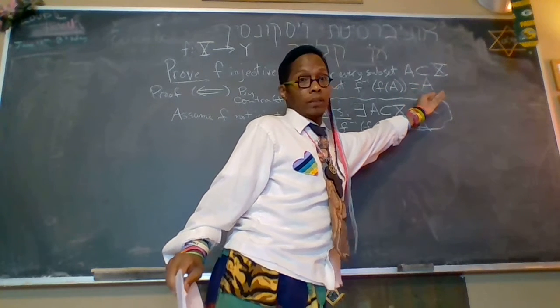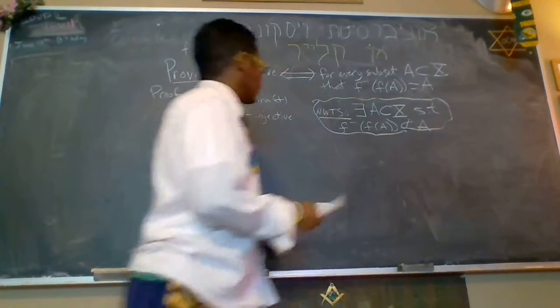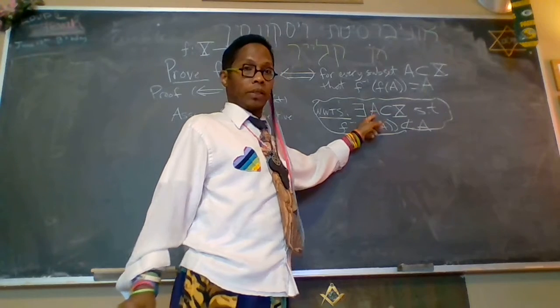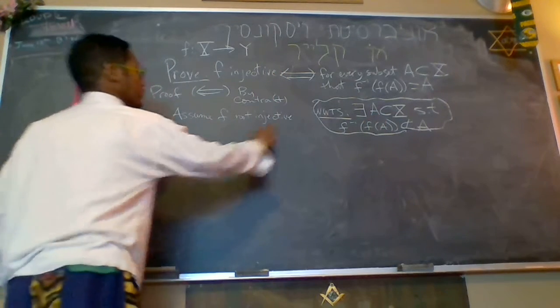Again, this is always, the right side is always a subset of the left side. Okay. So we're going to construct this set a.